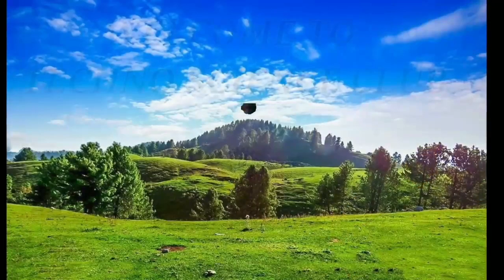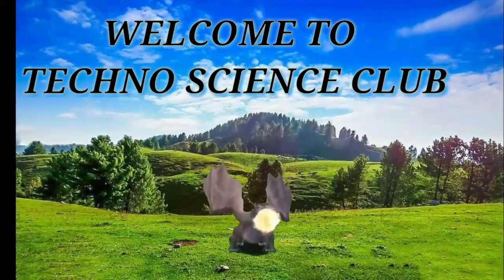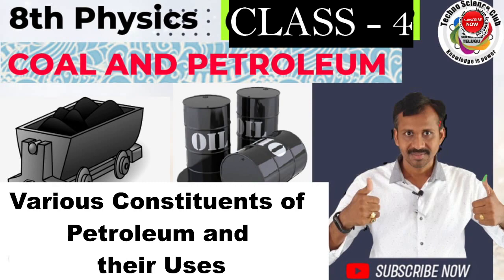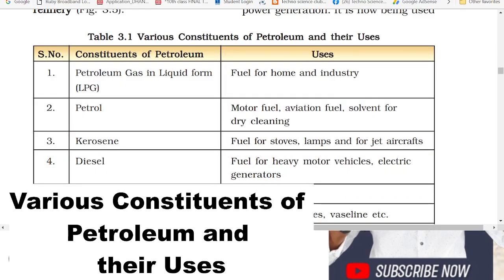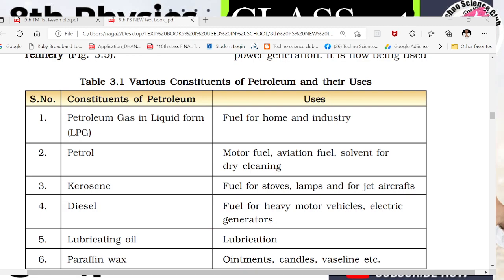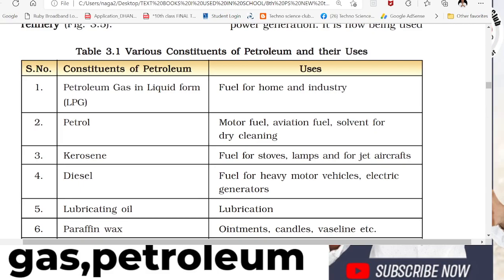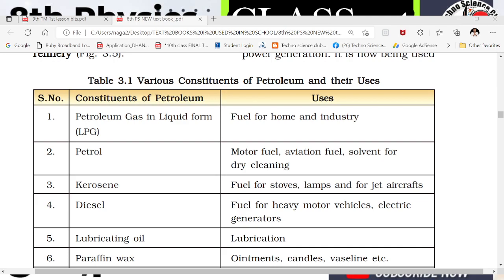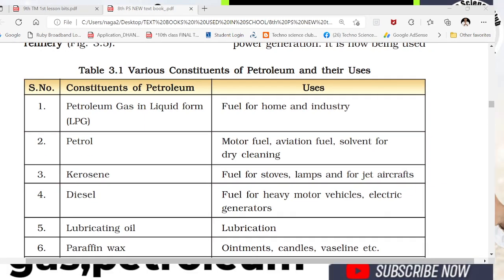Let's go into the topic. Welcome back to 8th Class, Coal and Petroleum, class number 4 — Various Constituents of Petroleum and Their Uses. You can observe a table. In this table, you can observe the various products which are coming from the petroleum.